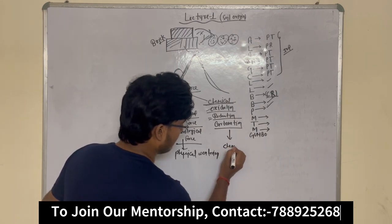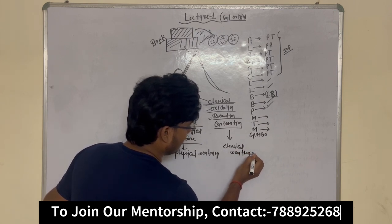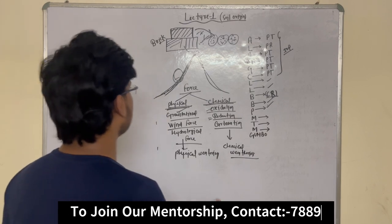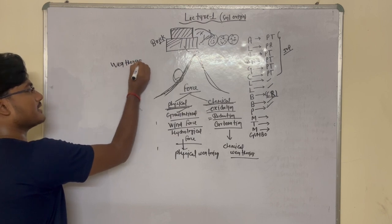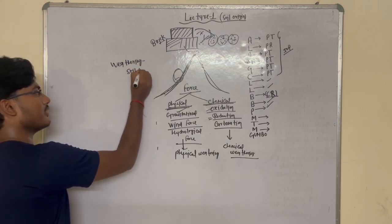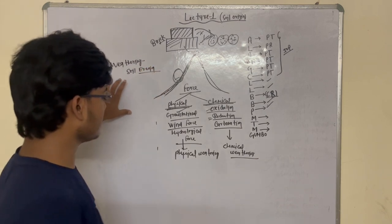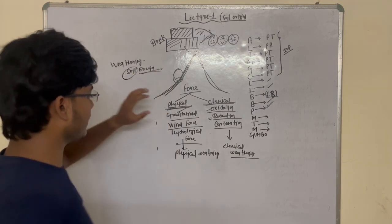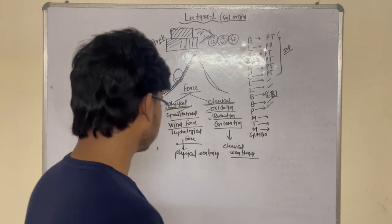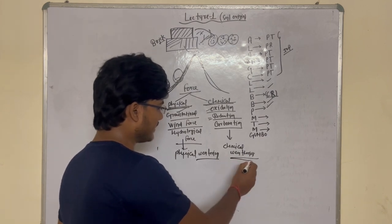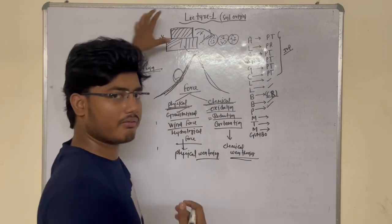Weathering is basically erosion — related to soil phenomena. So with physical weathering and chemical weathering, these are the phenomena involved. I hope you got the concept of weathering and how it occurs.